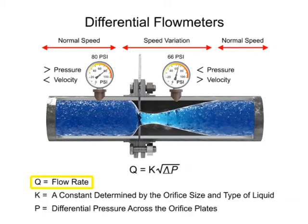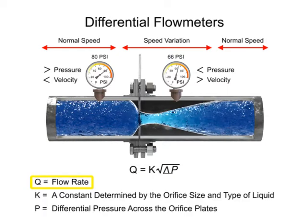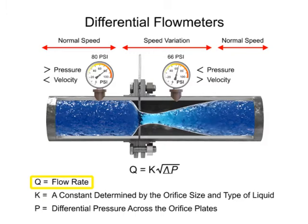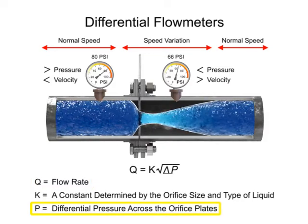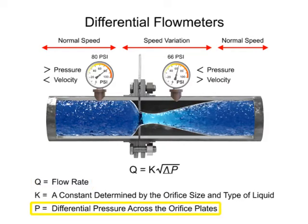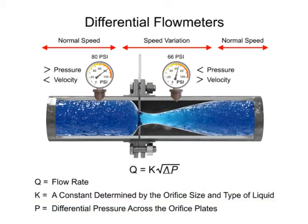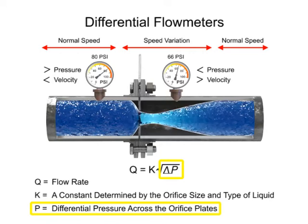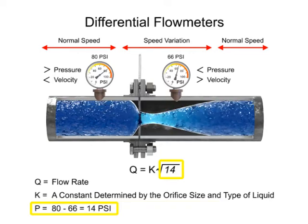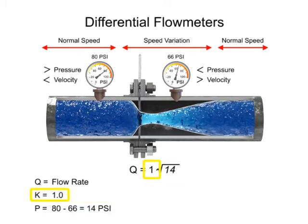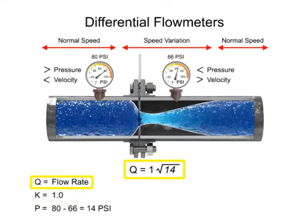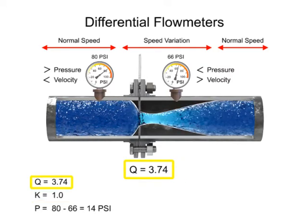The flow rate, Q, of a fluid through an orifice plate increases in proportion to the square root of the pressure difference on each side multiplied by the k-factor. For example, if the differential pressure increases by 14 psi with a k-factor of 1, the flow rate is increased by 3.74.